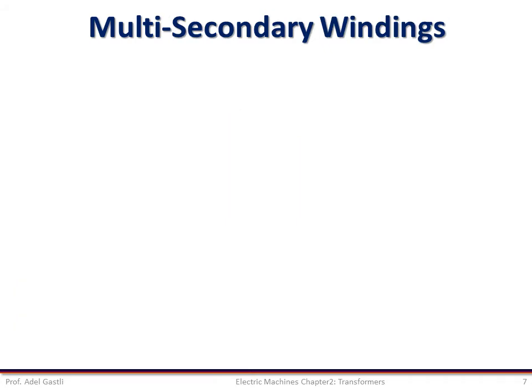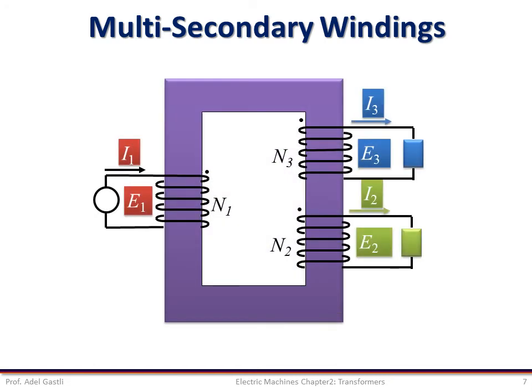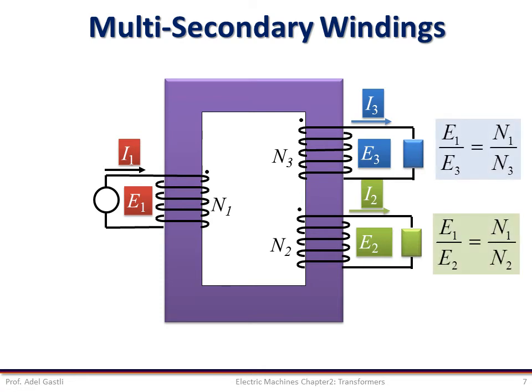We will see an example of multi-secondary winding transformers and describe its operation. Here we have one primary winding with N1 turns connected to the source, and two secondary windings: one with N2 turns and the second one with N3 turns. Each secondary winding is connected to a separate load and will have a different current depending on its EMF and the impedance of the load connected to it. From the previous two-winding analysis, we know that E1/E2 = N1/N2 and E1/E3 = N1/N3.